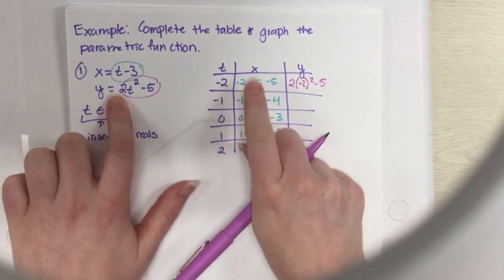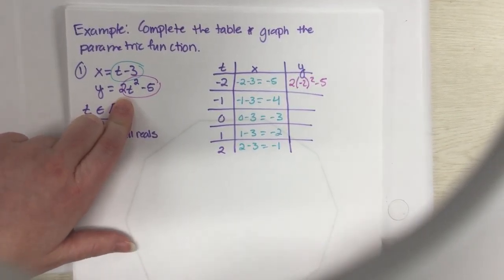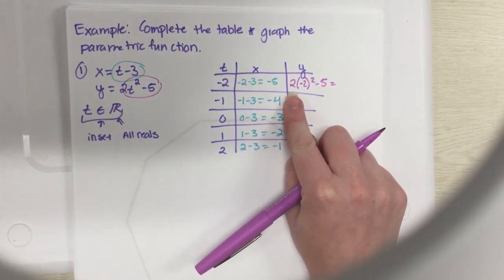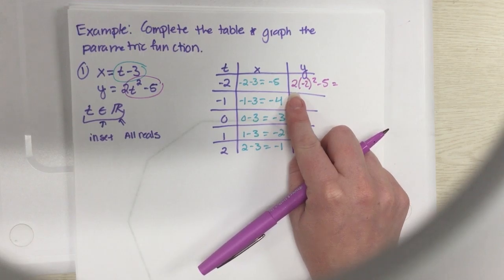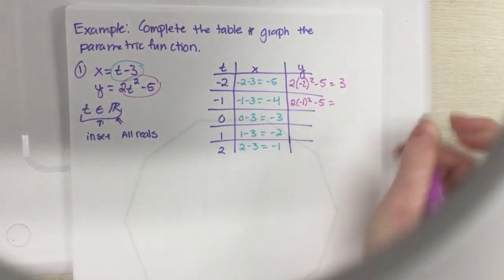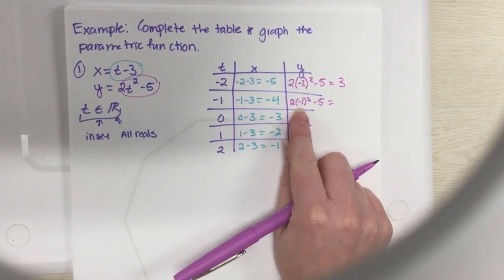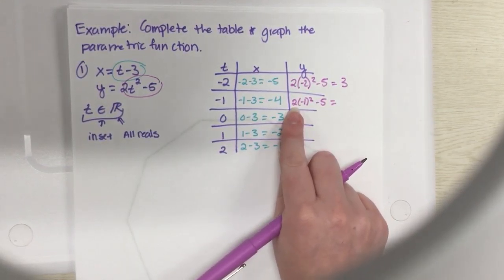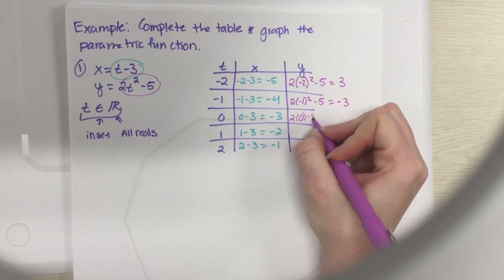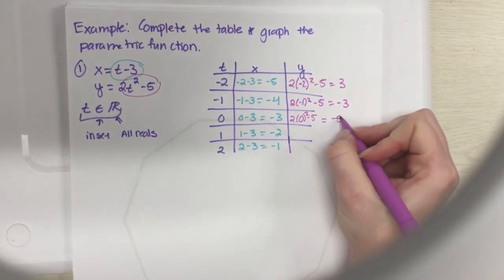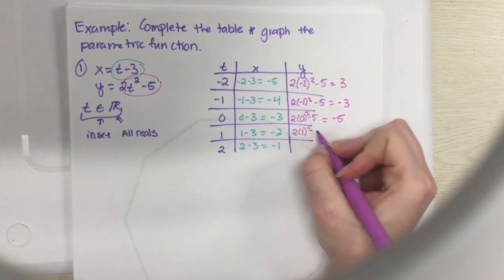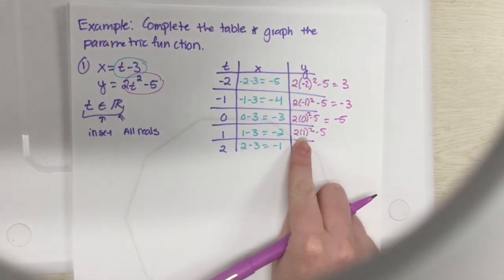And then our y values are just going to be this. You've got to do 2t squared minus 5. So you've got 2 times negative 2 squared minus 5. Remember, t is staying the same but you're plugging it into different functions to get x and y. Negative 2 squared becomes positive 4, 4 times 2 is 8, and 8 minus 5 is 3. Then we've got 2 times negative 1 squared minus 5. Negative 1 squared is positive 1, 1 times 2 is 2, and 2 minus 5 is negative 3. And we've got 2 times 0 squared minus 5, so that all becomes 0 and you're at negative 5.